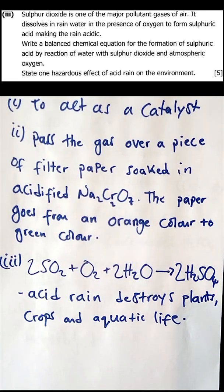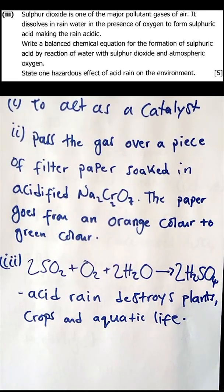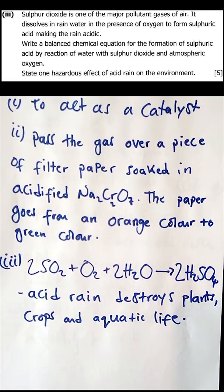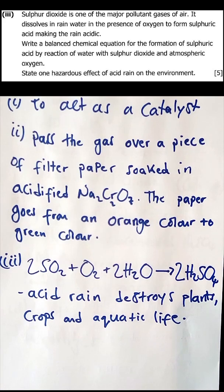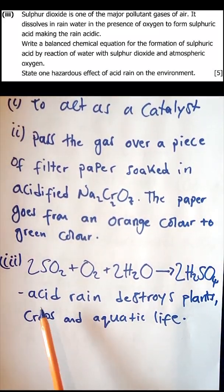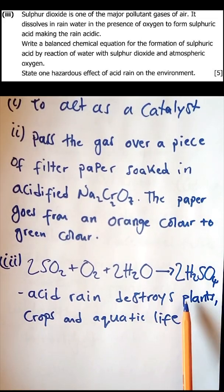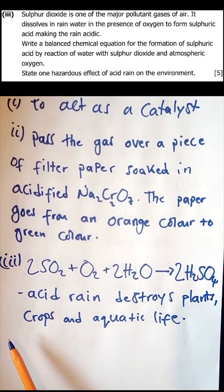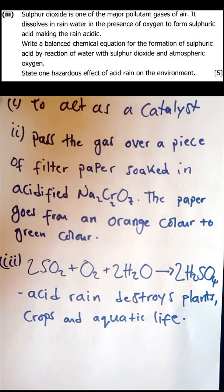State one hazardous effect of acid rain on the environment. You can state more, but since the question demands one, pick any one. Acid rain destroys plants and crops, and it also destroys aquatic life.